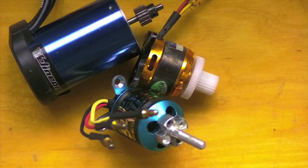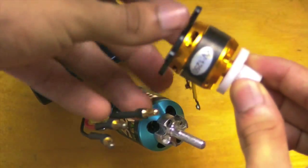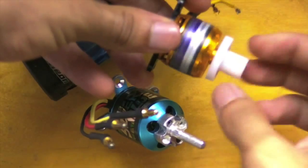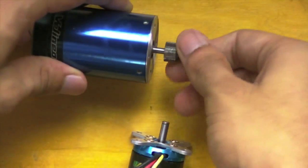Also, in out-runners, the whole can of the motor spins, not just the shaft. So if you look at this, for example, you can see that the whole motor is actually turning, not just the shaft, like in the in-runner.